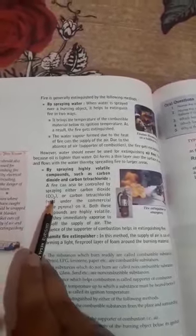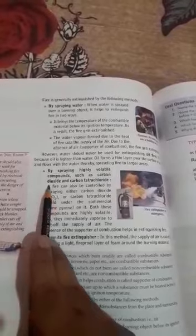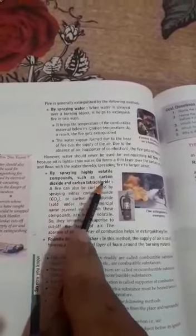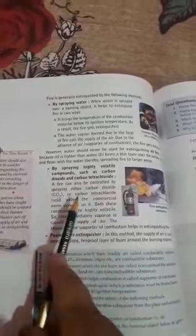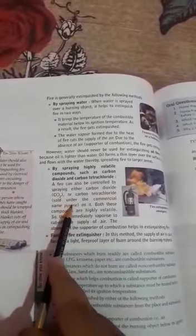The second method is by spraying highly volatile compounds such as carbon dioxide and carbon tetrachloride. Because they are highly volatile compounds, when we spray them on the fire, the fire gets extinguished. Pyrene is the name of carbon tetrachloride.